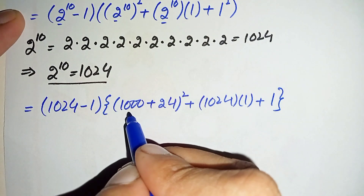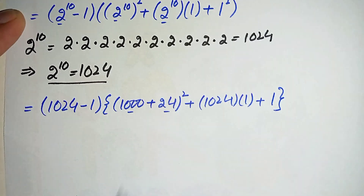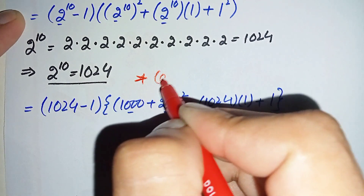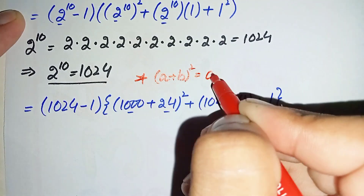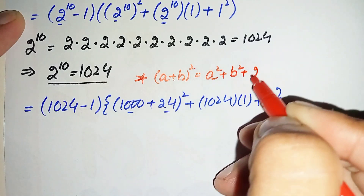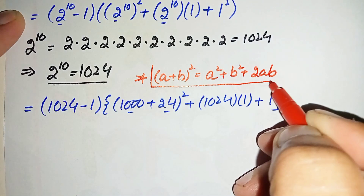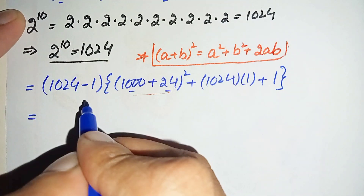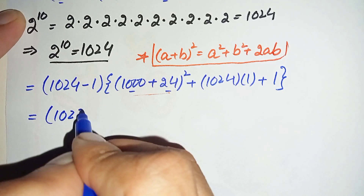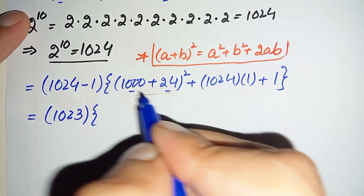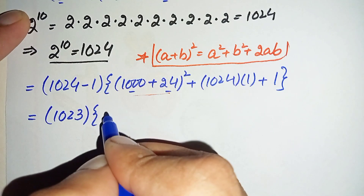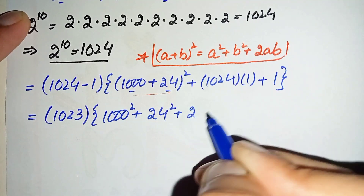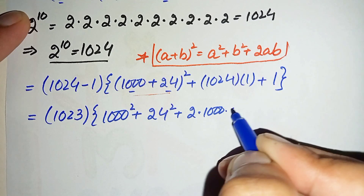Now in this term we will use the positive algebraic identity: (a plus b) whole squared equals a squared plus b squared plus 2ab. Here we split 1024 as 1000 plus 24, so a is 1000 and b is 24. This expands to 1000 squared plus 24 squared plus 2 times 1000 times 24.